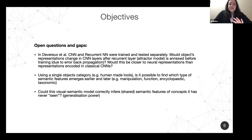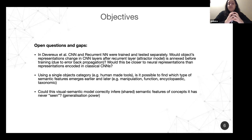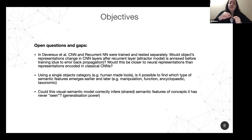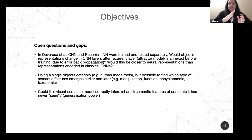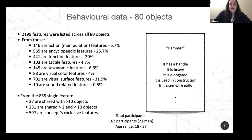One last thing we would like to examine is whether, using only the handmade tools category of objects, we can see if manipulation features are activated earlier than function or encyclopedic features.